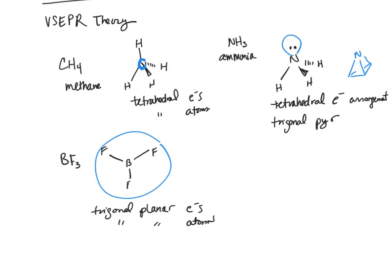Lastly, let's look at a simple example of water. Here we've got two lone pairs. So again, we have a tetrahedral arrangement of electrons, but now when we look at the atoms, we have a bent arrangement of atoms.